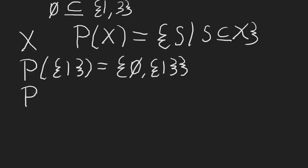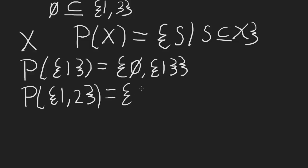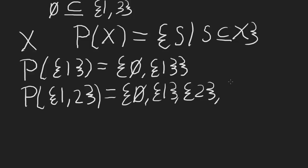What about the power set of the set containing 1 and 2? The empty set is a subset of everything. The set {1} is a subset of {1, 2}. The set {2} is also a subset of {1, 2}. And finally, the entire set {1, 2} is a subset of itself. So the power set of {1, 2} is {∅, {1}, {2}, {1, 2}}.